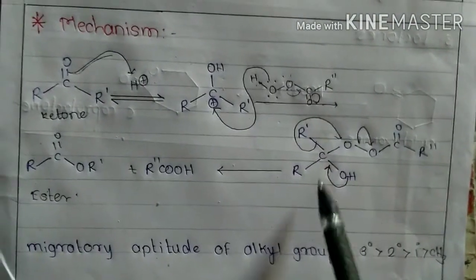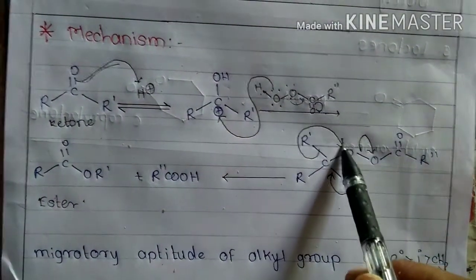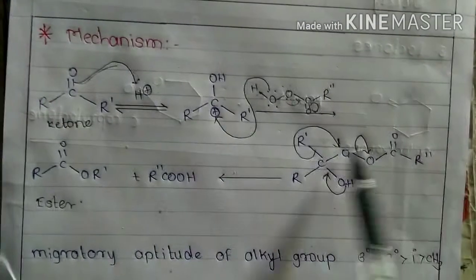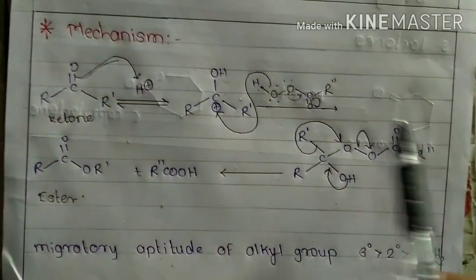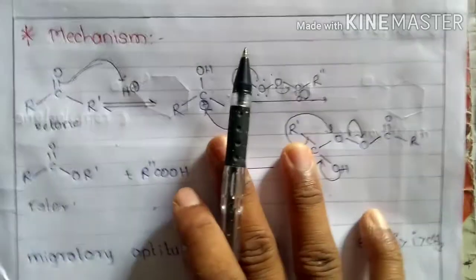Here we can see carbonyl group is formed and R' is transferred here and the carboxylate anion is removed. So here is the formation of carboxylate. So here is the formation of acid.